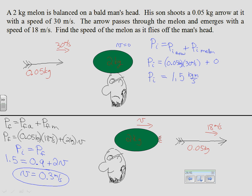Whether you have two objects that stick together, one object bouncing off another, or one velocity being zero, in all these inelastic problems we've been given one of the velocities after the collision and we're looking for the other. For elastic collisions, they don't give us this extra piece of information. Here we had the extra information that the arrow was moving at 18 meters per second after the collision. For elastic collisions, there's less given, and we use the extra requirement of kinetic energy conservation.